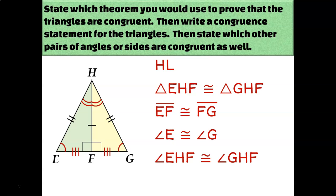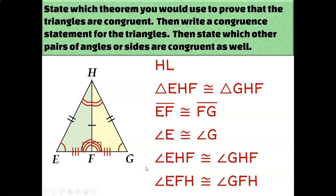Technically, there's one more thing to note: all I knew about the right angles is that they were right, but now I can also say they're congruent to each other because of CPCTC — or because of the right angles congruence theorem. Either way, since these are two congruent triangles, all of their pairs of corresponding parts are congruent.